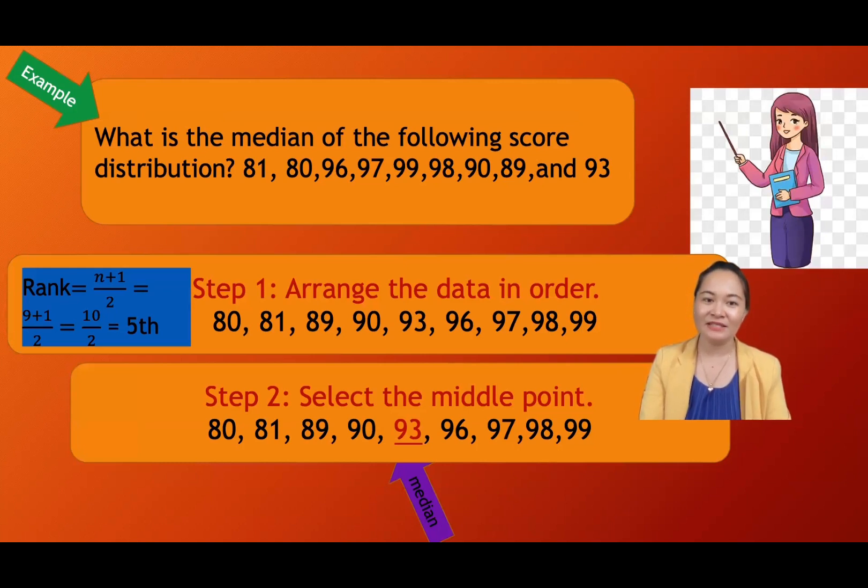An example, what is the median of the following score distribution? 81, 80, 96, 97, 99, 98, 90, 89, and 93. Step one, arrange the data in order.